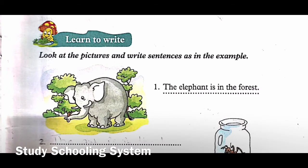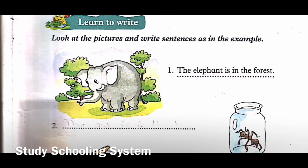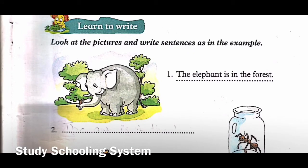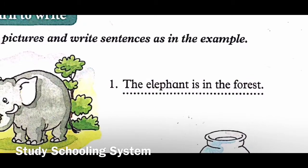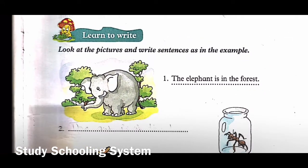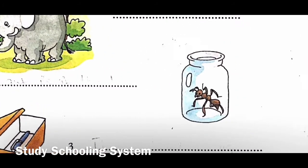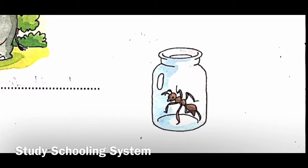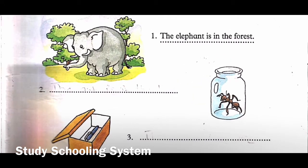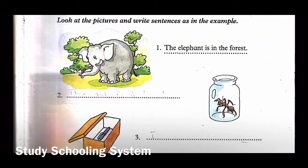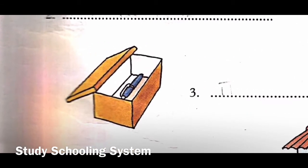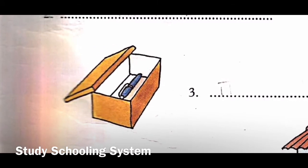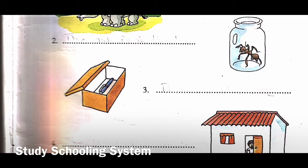Now look at the next exercise: 'Learn to Write' - look at the pictures and write sentences as in the example. The example picture shows an elephant in a forest with trees around him. The sentence written is: 'The elephant is in the forest.' Number two: the animal is an ant and it is in a bottle, so we write: 'The ant is in the bottle.' Number three: there is a box and inside it is a pen, so: 'The pen is in the box.'